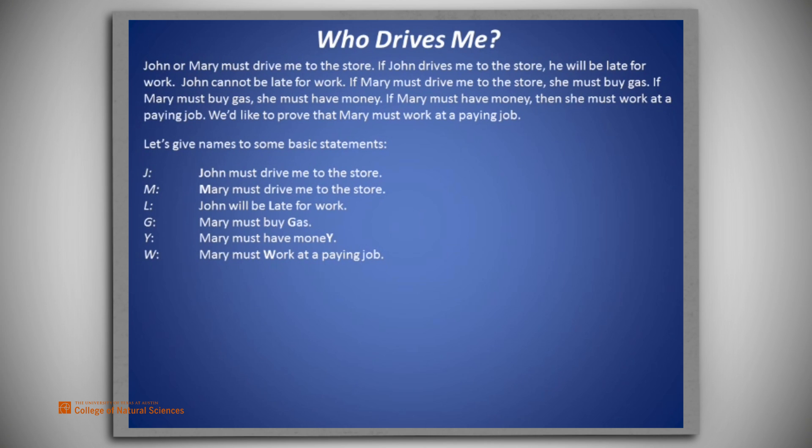From the story, we extract these premises. J or M, which is John or Mary must drive me to the store. J implies L, which is if John drives me to the store, he will be late for work. Not L, which is John cannot be late for work.